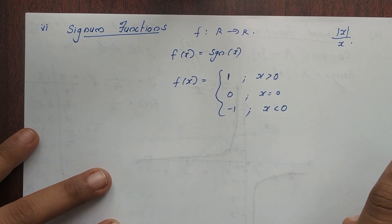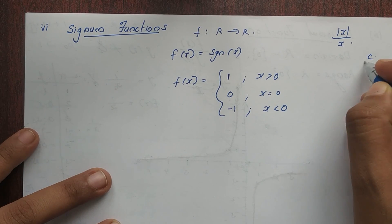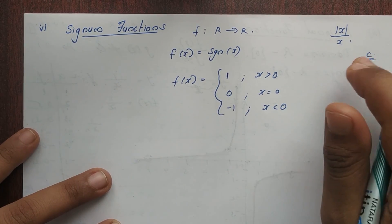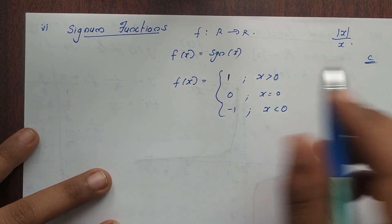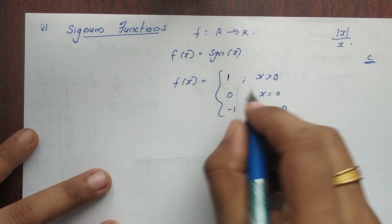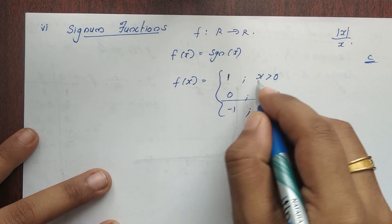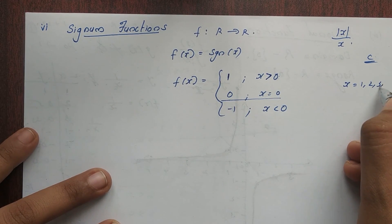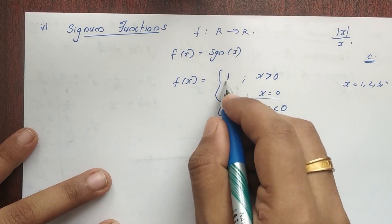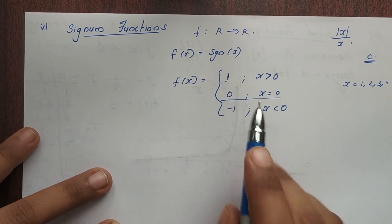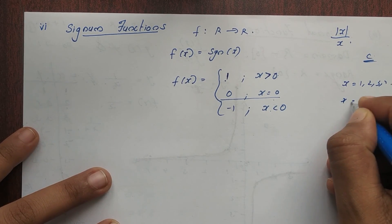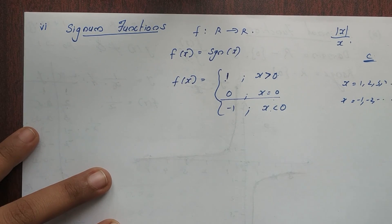We will do constant function. The range is equal to a constant c. Whatever value we input, the output will be constant. So the value is 0 when x equals 0. Then for x greater than 0, that is 1, 2, 3, 4 etc., the value is equal to 1. And for x less than 0, that is minus 1, minus 2, minus 3, the value is equal to minus 1.